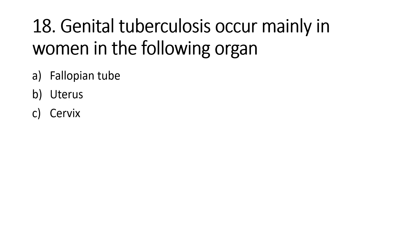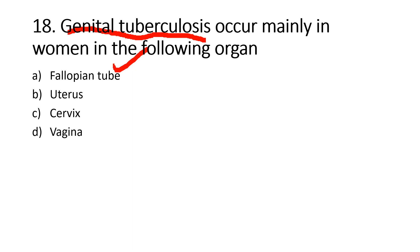The most commonly affected site in genital tuberculosis is: Option A, Fallopian tube; Option B, [Uterus]; Option C, Cervix; Option D, Vagina. Right answer is Option A, Fallopian tube. Genital tuberculosis is most commonly found in the fallopian tube.